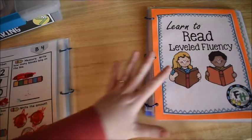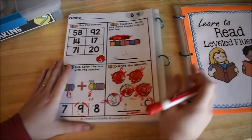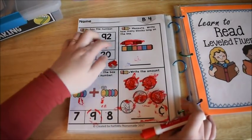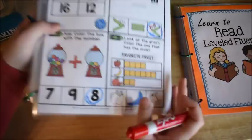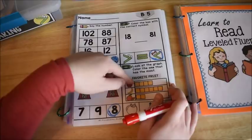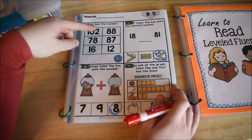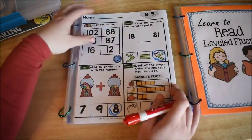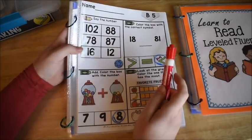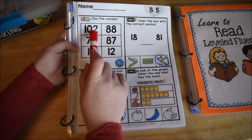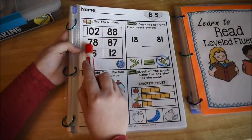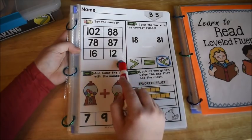So what we do, each page has four different quadrants, four different parts. And there's a different math skill for each day. The beginning is fluency saying the number. So the children have to touch and say each number. You're going to see one of my five-year-olds doing this in a minute. They touch and they say 102, 88, 78, 87, 16, 12, and then they color in the star.